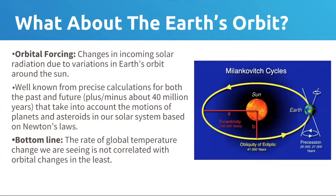Changes in Earth's orbit are also something I hear about — the relative position of how Earth moves around the sun is important for our planet's temperature. The tilt of our Earth on its axis determines our seasons. The ice ages in Earth's past are related to changes in the shape of Earth's orbit, determining how much energy we receive from the sun. But these are very, very slow changes that we can precisely calculate. There's no way these kinds of changes could be related to warming we're seeing over a century or even decadal timescales.